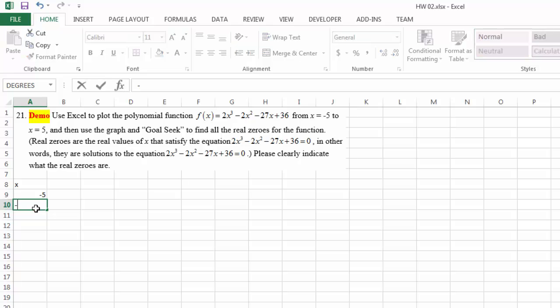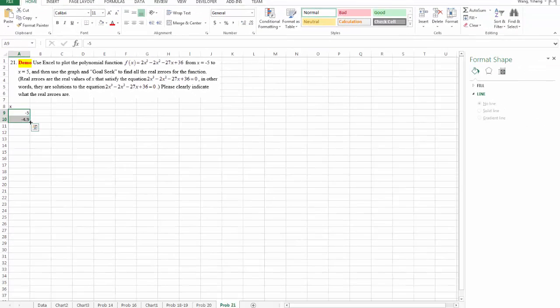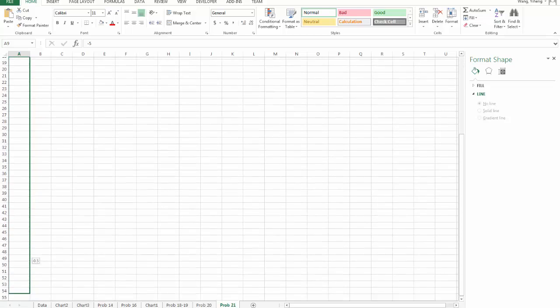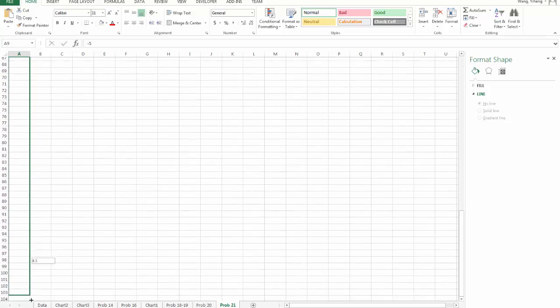And then I'm going to pick a step size. Let's do negative 4.9. That is a step size of 0.1. And then basically I'm just going to copy this pattern until x is 5.